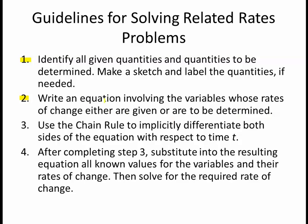This equation is going to be our main equation and we're going to end up using it twice. Step three, we're going to use the chain rule to implicitly differentiate both sides of the equation with respect to time t. Fourth step, after completing step three we're going to substitute into the resulting equation all known values for the variables and their rates of change. Then we'll solve for the required rate of change.